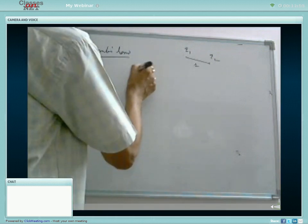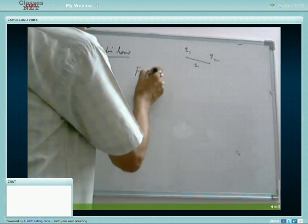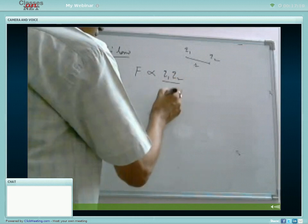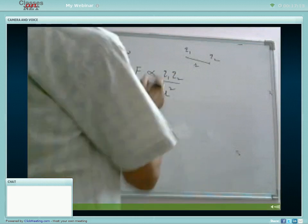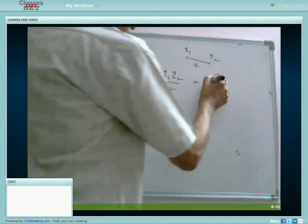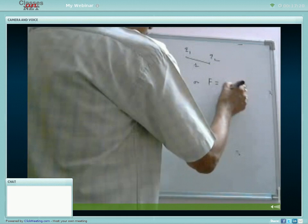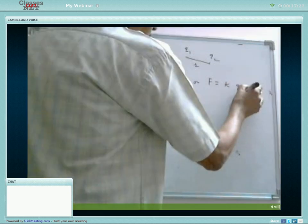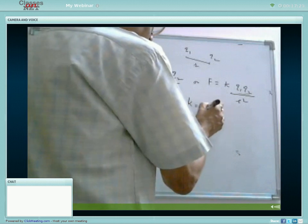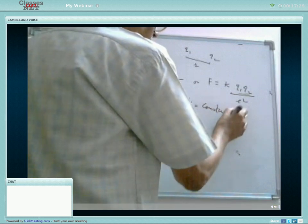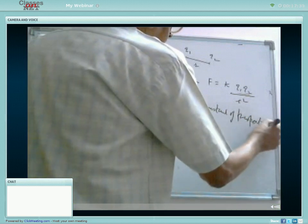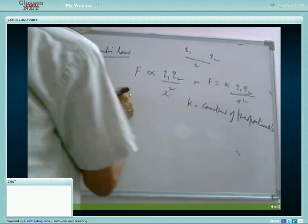And this force is known as electrostatic force, F. It depends upon strength of the two charges, inversely upon the square of the distance between them. That means F is proportional to q1 q2 upon r square. Or, it can be written as some constant k, q1 q2 upon r square, where k is constant of proportionality.